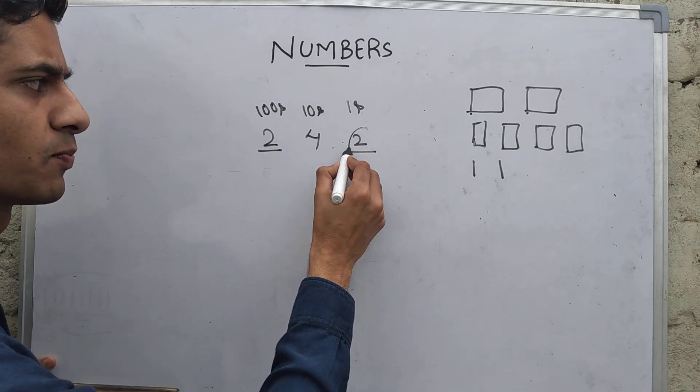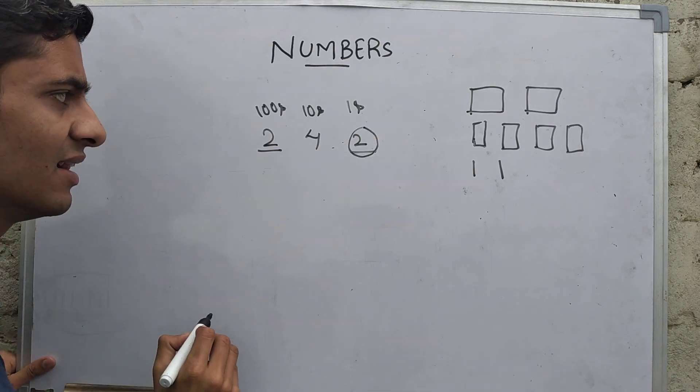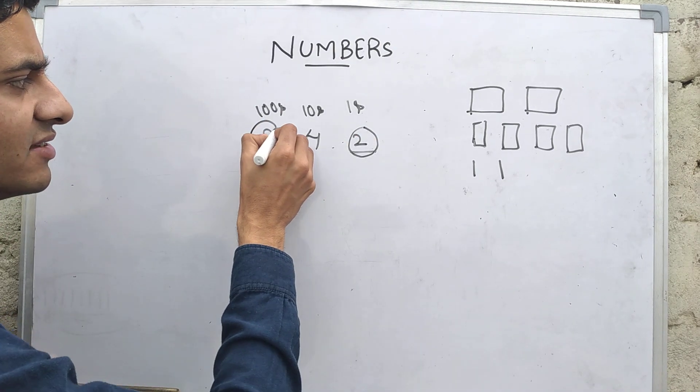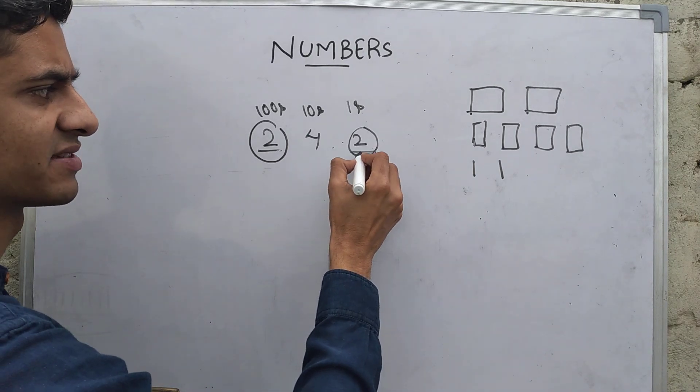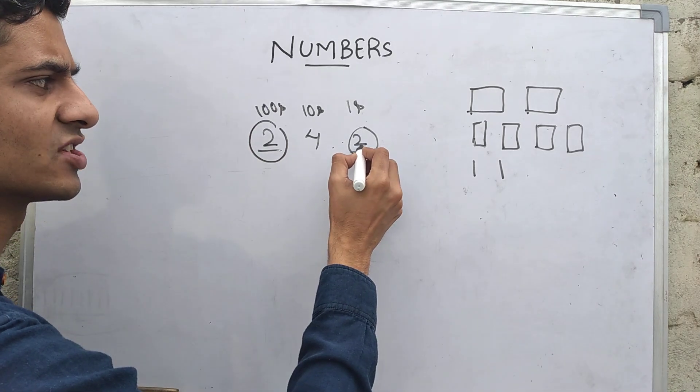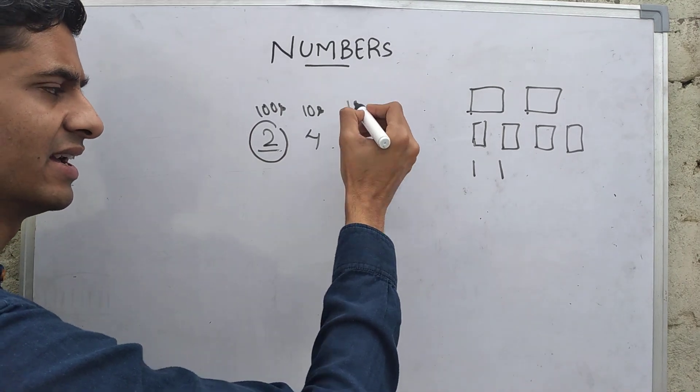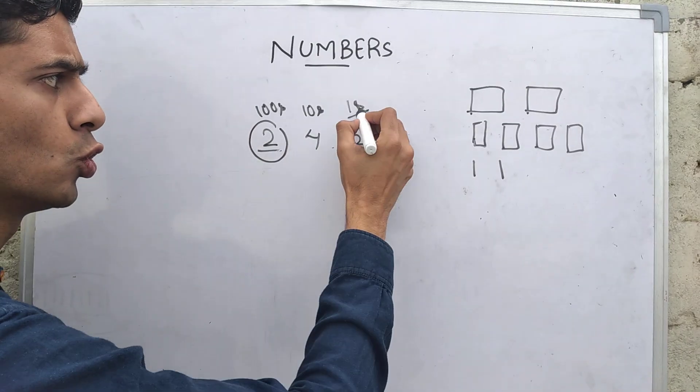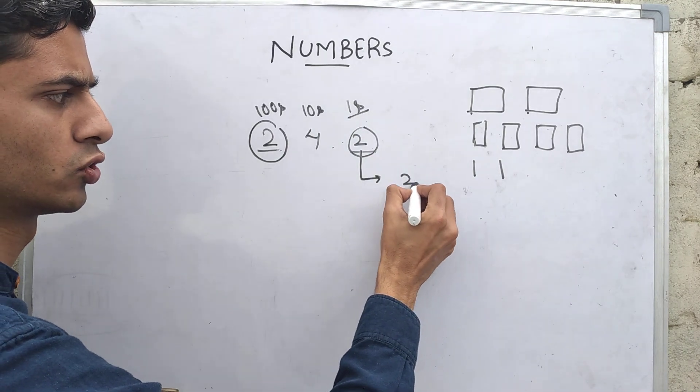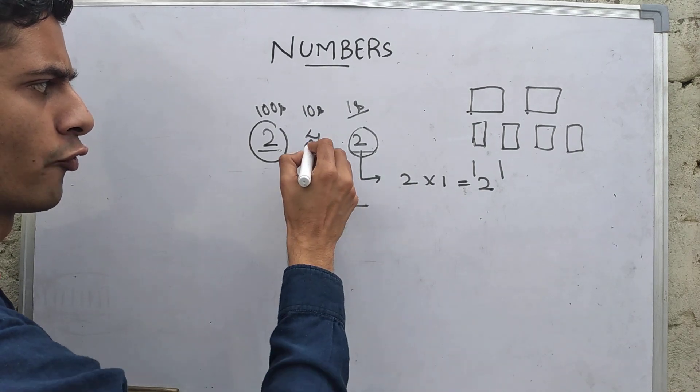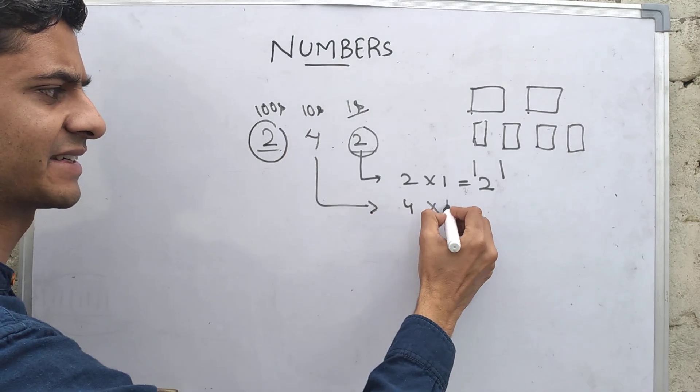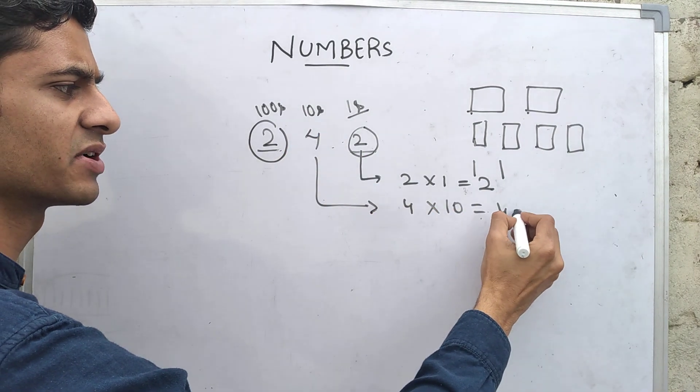This is also two and this is also two, but this two at this position resembles something else. This two at this position resembles something different value. This two represents two ones, so it represents two. Four tens, so it represents 40.